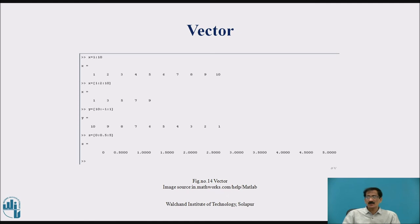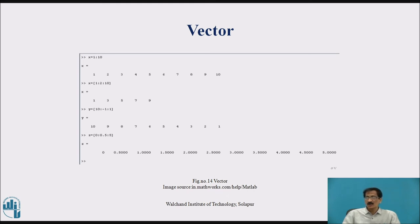Now, z = 0:0.5:5 will display the numbers between 0 to 5 with a difference of 0.5. So the elements of z will be 0, 0.5, 1, 1.5, and so on till 5.0.